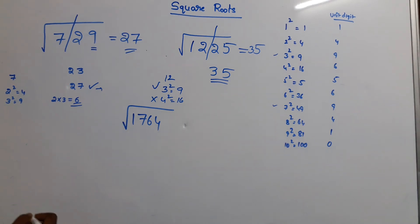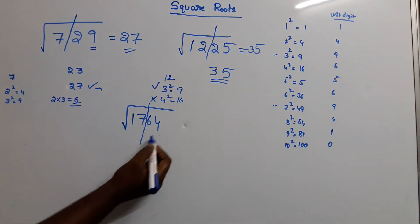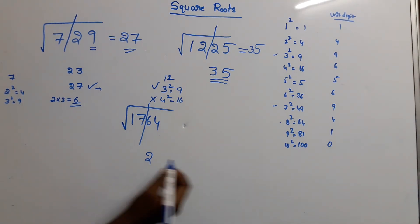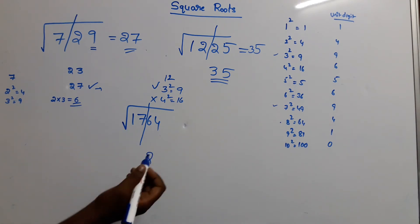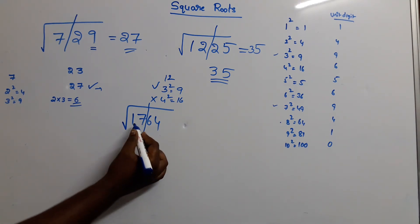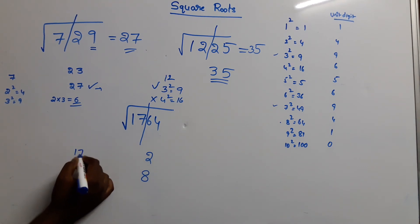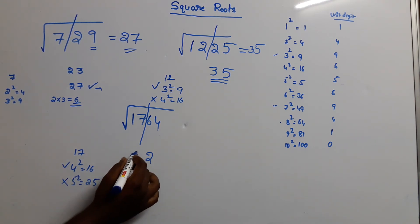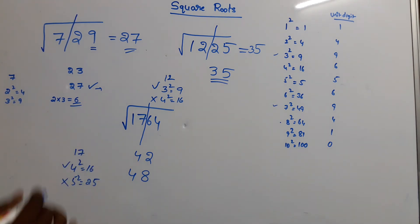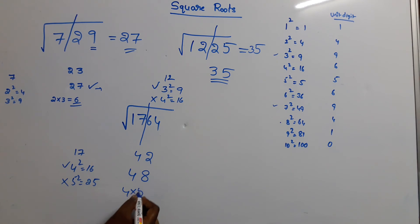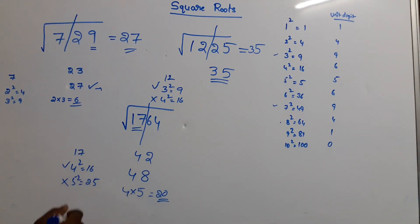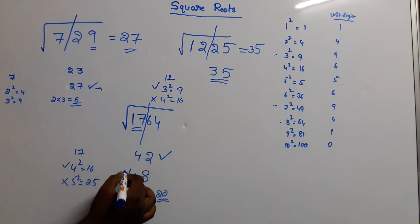Third one: 1764. The unit digit is 4. So 2 square is 4 or 8 square is 64 — unit digit 4. Next, the remaining number: 5 square is 25, so the leading value is 4. 42 is confirmed — next digit is 5. 4 times 5 is 20, and 17 is less than 20. So this value gives us 42.